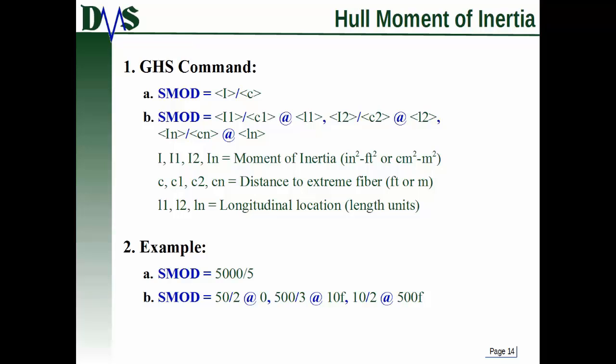And what that is, is the I values, those are your moment of inertia, remember your units, and the slash. And then the C values are the distance to extreme fiber. And then it's always given at a longitudinal location. Or you can define a single property for the entire hull.